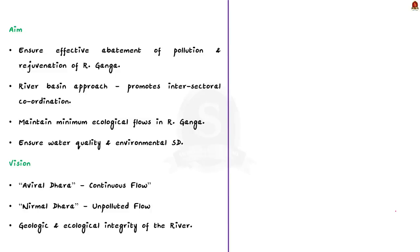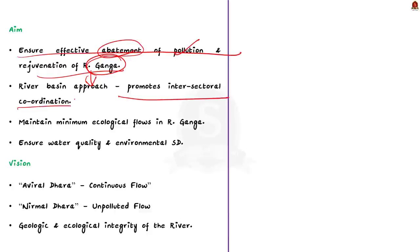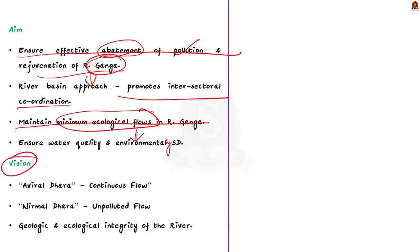The aim and objectives of NMCG are to accomplish the mandate of NGRBA: first, to ensure effective abatement of pollution and rejuvenation of river Ganga by adopting a river basin approach for intersectoral coordination; and second, to maintain minimum ecological flows in the river Ganga to ensure water quality and environmentally sustainable development. The vision is to restore the wholesomeness of the river, ensuring aviral dhara (continuous flow) and nirmal dhara (unpolluted flow), along with geological and ecological integrity.